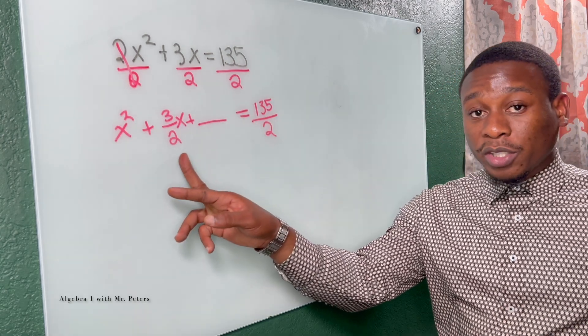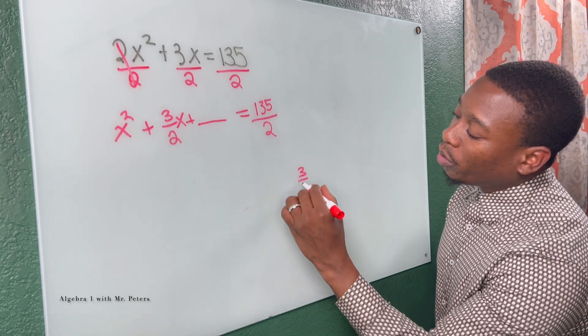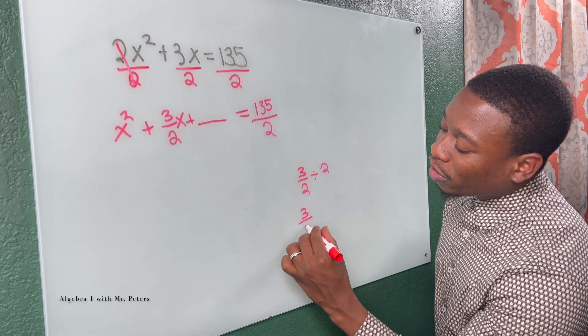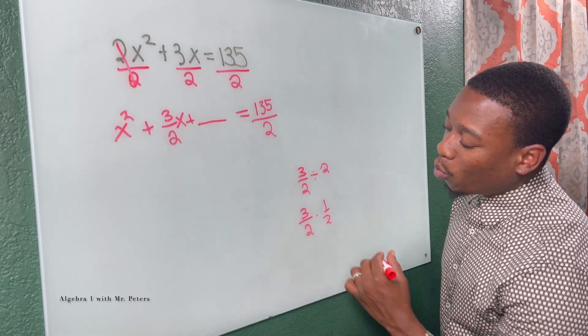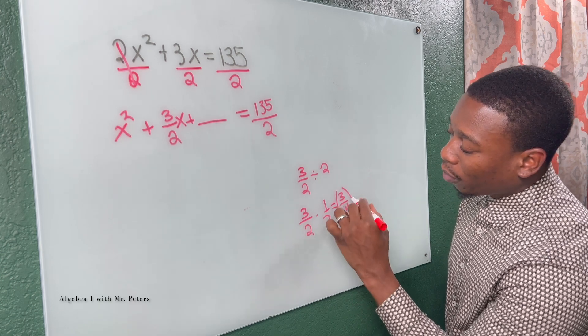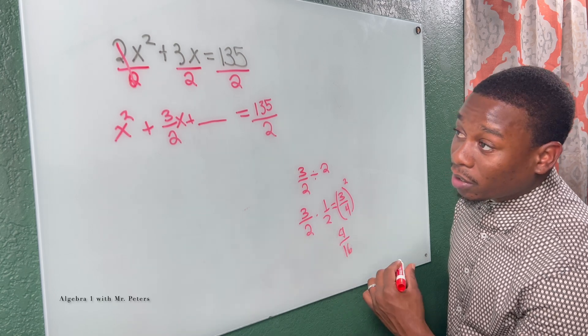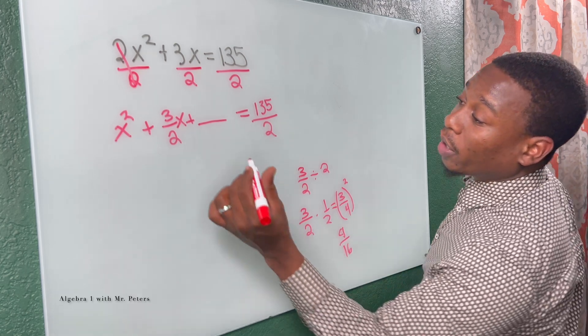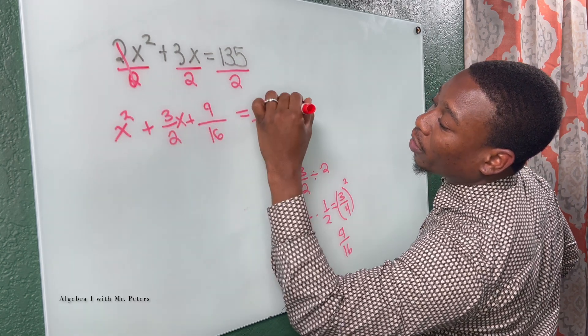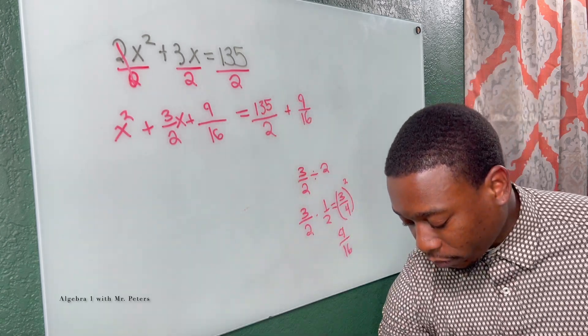Now remember, first to complete the square, we gotta take half of B and square it. So when we do three over two divided by two, that just turns into three over two multiplied by one half. That's gonna give us three over four. Square it, we get nine over 16. So when we complete this perfect square trinomial, we're gonna add nine over 16 here and we're gonna add nine over 16 on the other side.